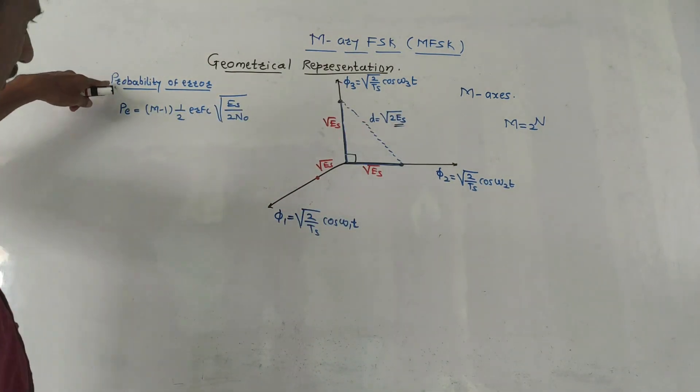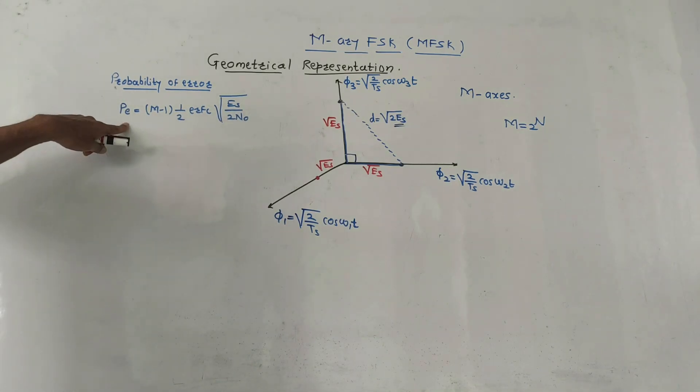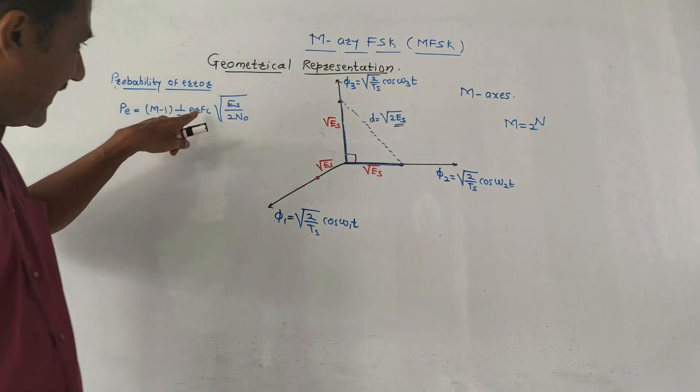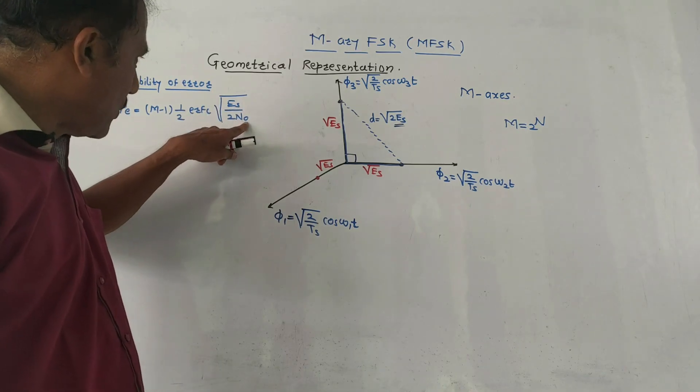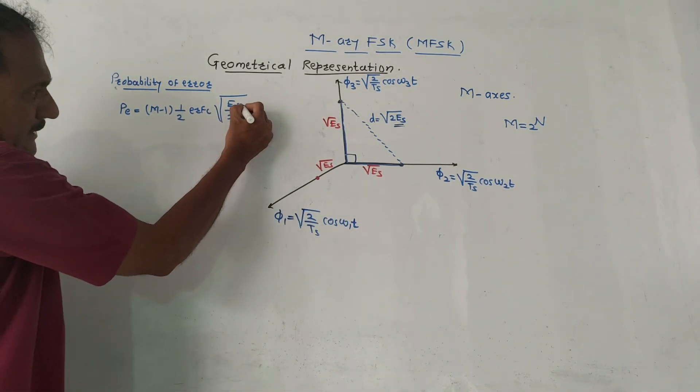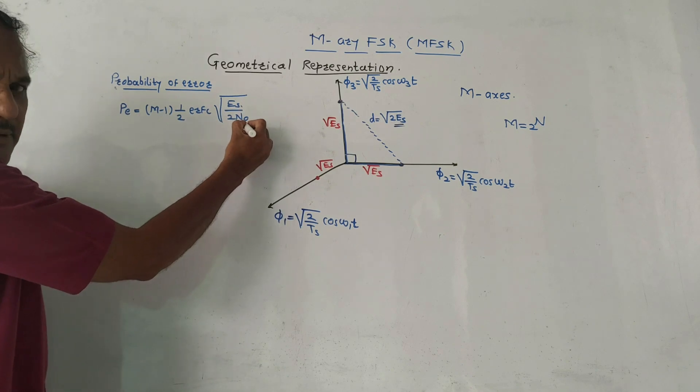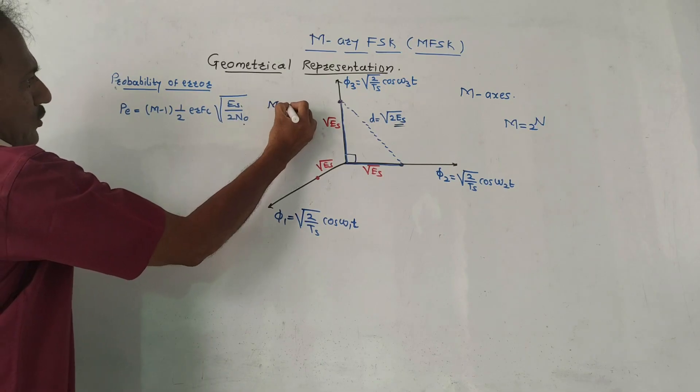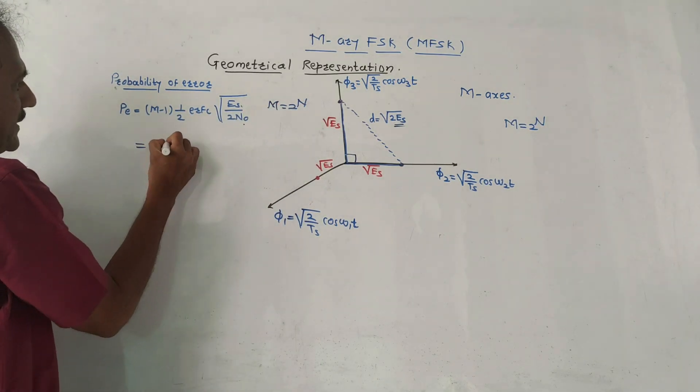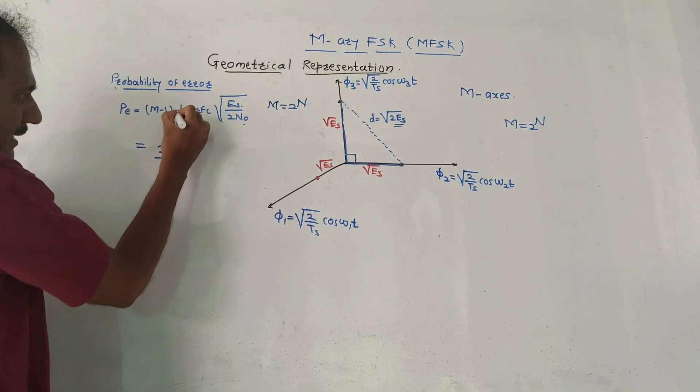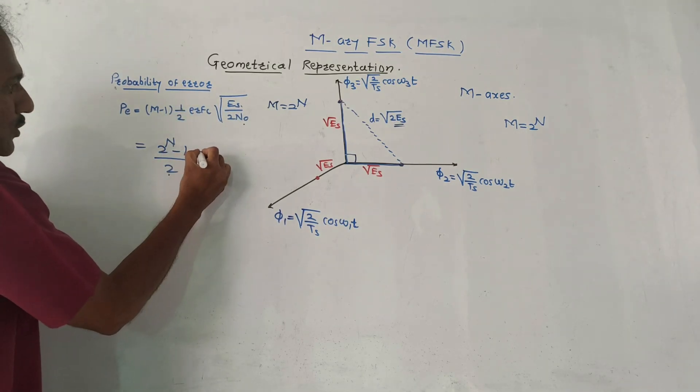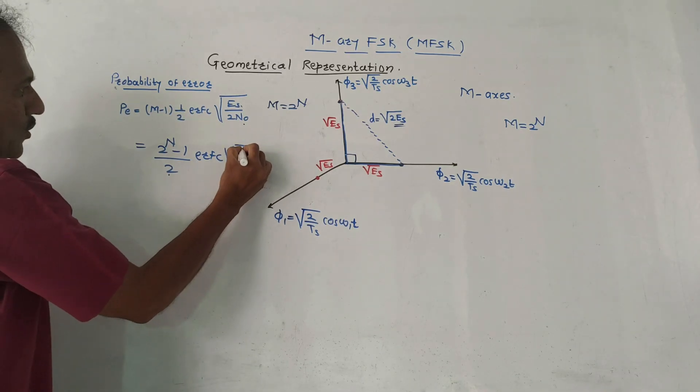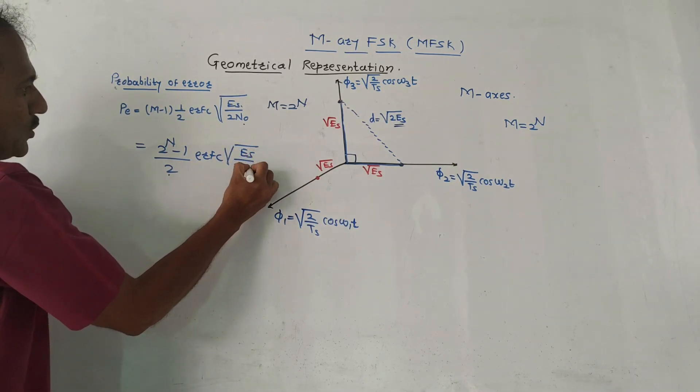Now, probability of error: probability of error is given by M minus 1 over 2 times 1 half erfc, that is complementary error function, square root of ES upon 2 N0. ES is the symbol energy. We have learned the meaning of N0 in earlier units. We know that M equals 2 raised to n, so let us put this value. This becomes 2 raised to n minus 1 over 2 times 1 half erfc square root of ES upon 2 N0. This is the mathematical equation for probability of error of MFSK.